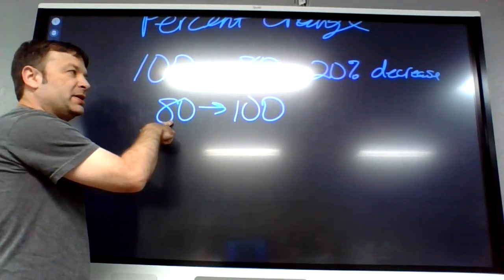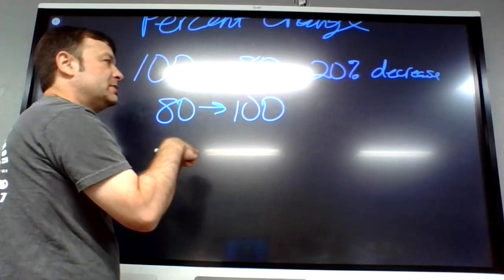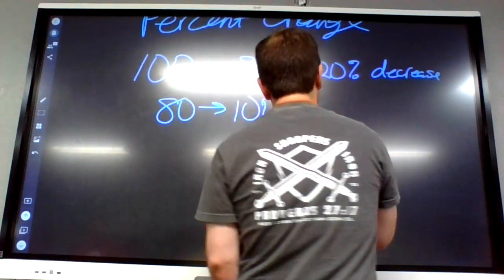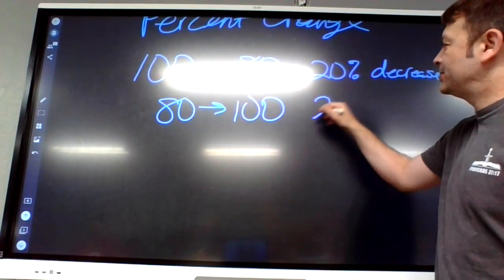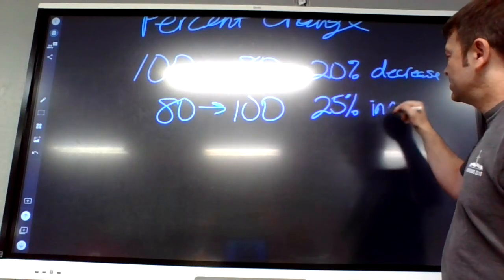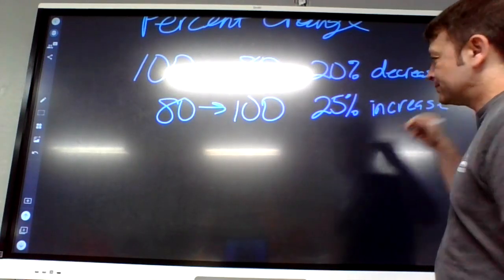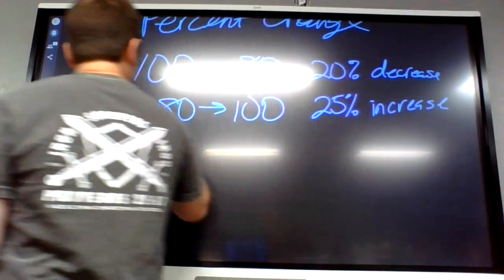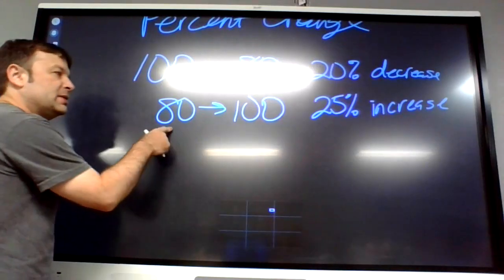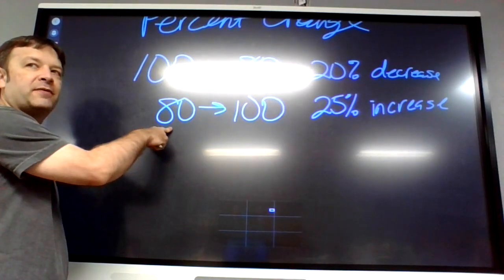20 is one-fourth of 80, or a quarter of 80, so this would actually be a 25 percent increase. How? Because 20 is 25 percent of 80.